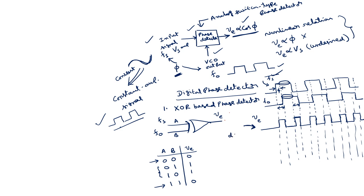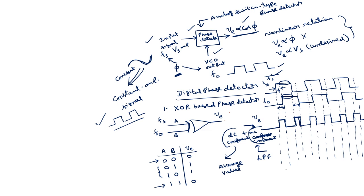This waveform will have both a DC component and an AC component, because any arbitrary signal can be represented as a sum of DC and infinite sinusoidals using Fourier series. So this will also have a DC component as well as some AC components. The AC components can be filtered by using a low-pass filter, and only the DC will be left, so we get the average value. The average value of this waveform is obtained by passing through the low-pass filter with a proper cutoff frequency. This DC voltage — the average value — will be applied to the VCO, which changes the frequency of the VCO.